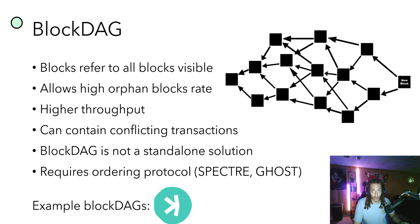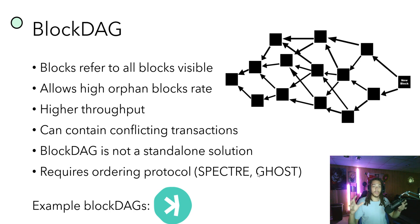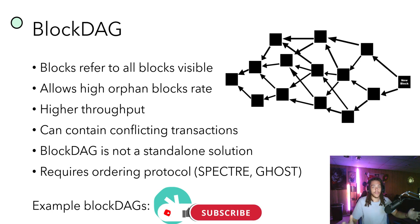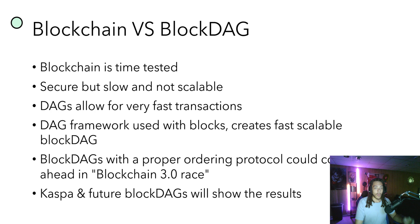This is where an ordering protocol such as SPECTER or GHOSTDAG comes in. GHOSTDAG was created by Jonathan Sablinski and is fundamental to giving the BlockDAG the structure it needs to run correctly — without it, you wouldn't know the transaction order. Check out DAG Labs if you're interested in more on that technology. I'll do an in-depth look at GHOSTDAG in the future. Currently, Kaspa is the main example of a BlockDAG — if there are others, drop them in the comments.